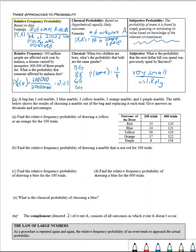Subjective probability is something we won't be working with too much. One example: what is the probability that the next dollar bill you spend was previously spent by Beyoncé? Based on personal reasoning — being quarantined, not knowing Beyoncé, and thinking she might live in New York — I would say my probability is very, very small. But if one of you knows Beyoncé, your probability might be much higher. That's all a subjective probability, as opposed to classical or theoretical.